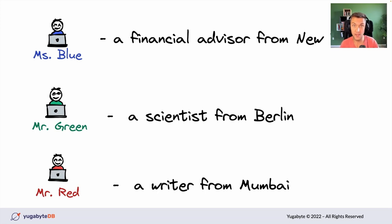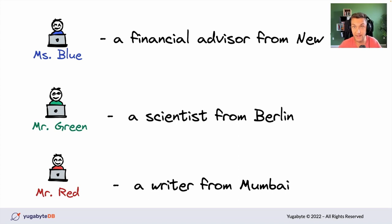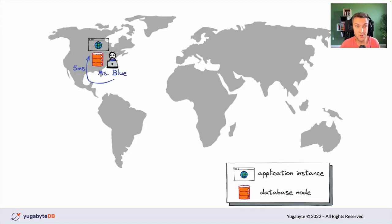As a startup company, our first version of the application will be running in one cloud region, probably even within a single availability zone, with an application instance and a database node that will keep all the messages, channels, and workspaces. Once we launched our first version, we've got three representative users: Mrs. Blue, a financial advisor from New York; Mr. Green, a scientist who lives in Berlin; and Mr. Red, a writer who moved to Mumbai in India. One day they came together and decided to use our Slack-like corporate messenger.